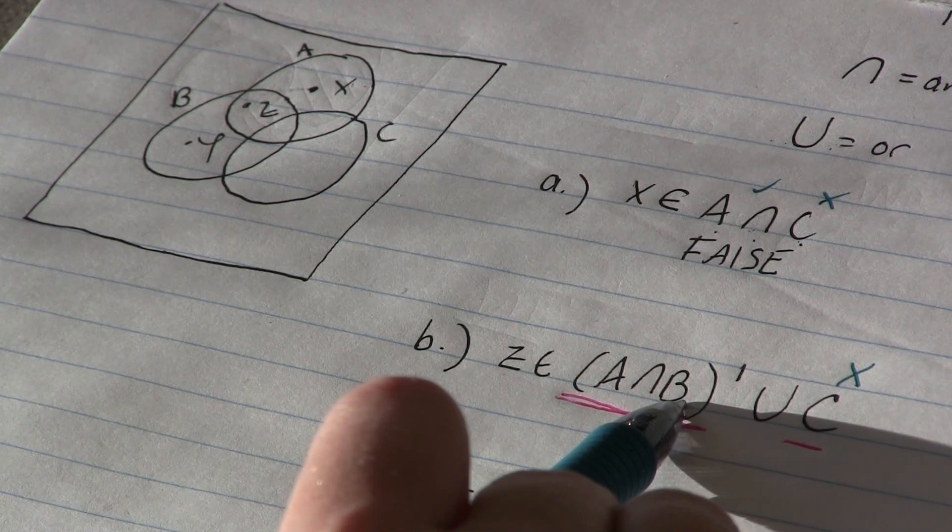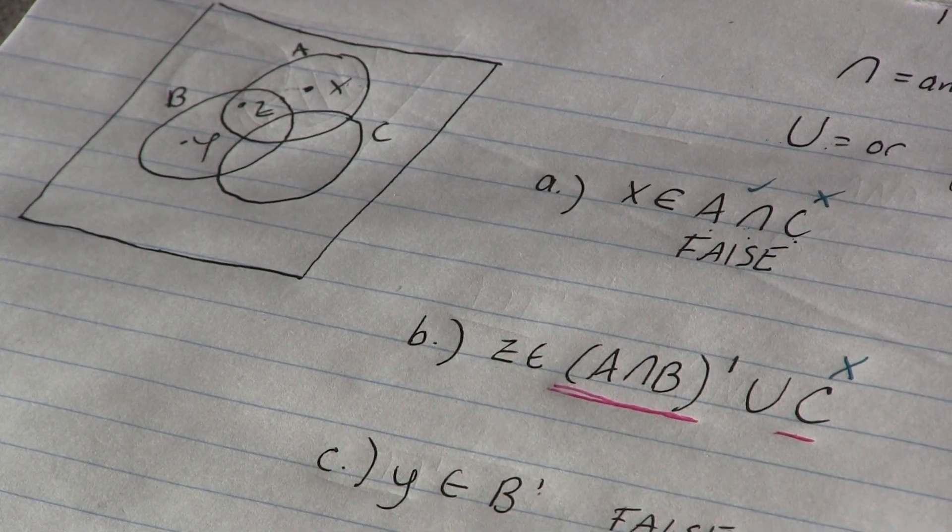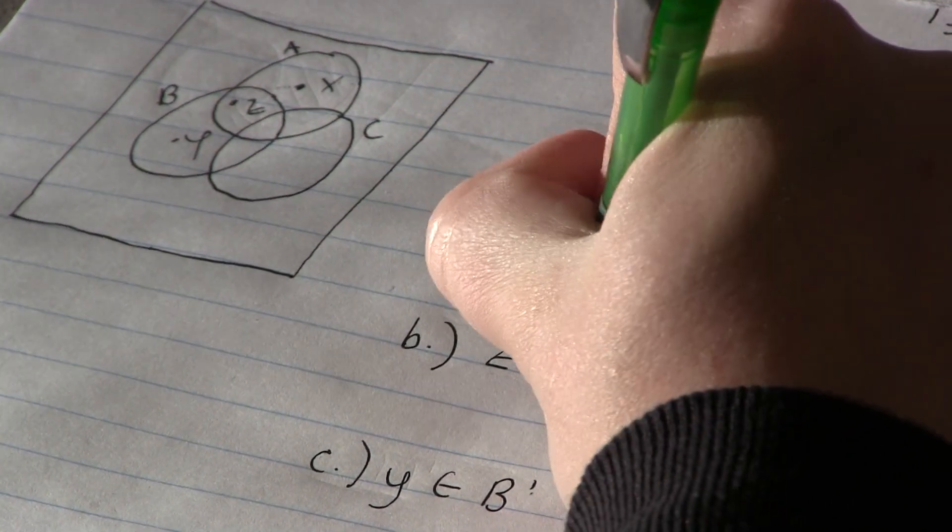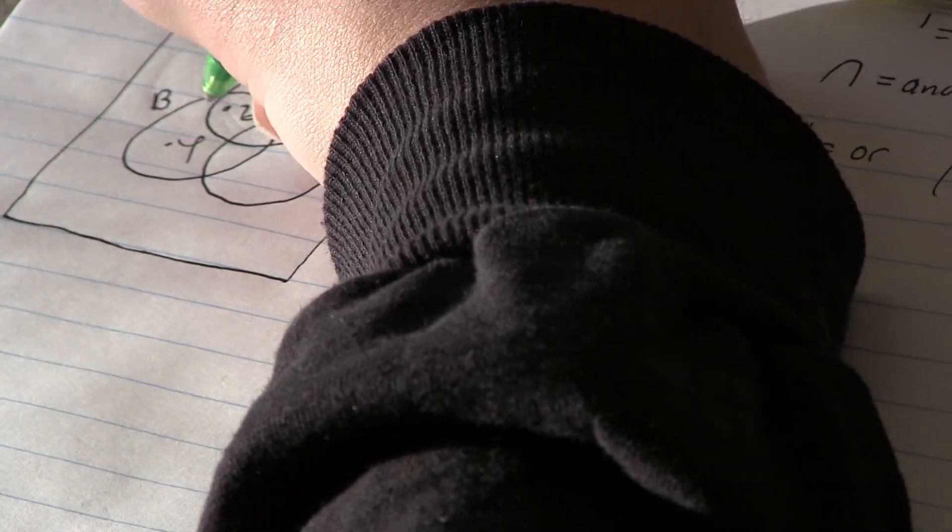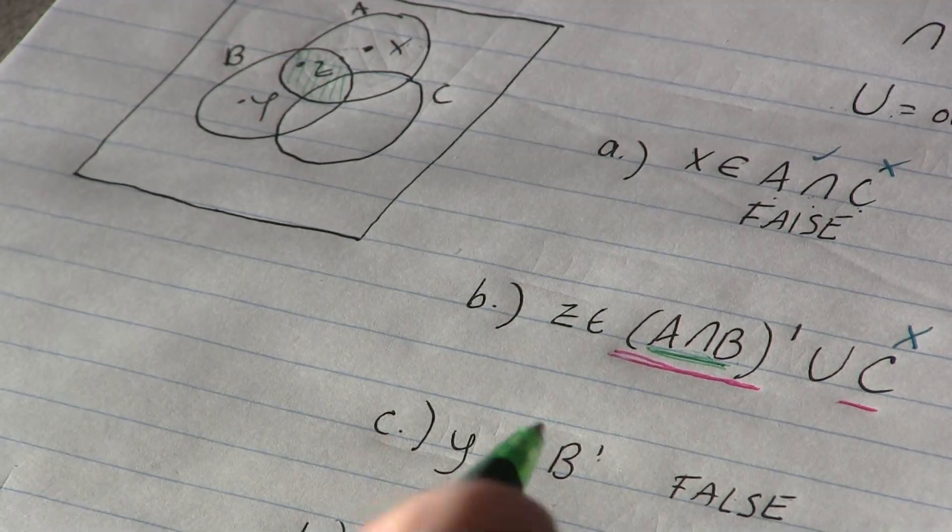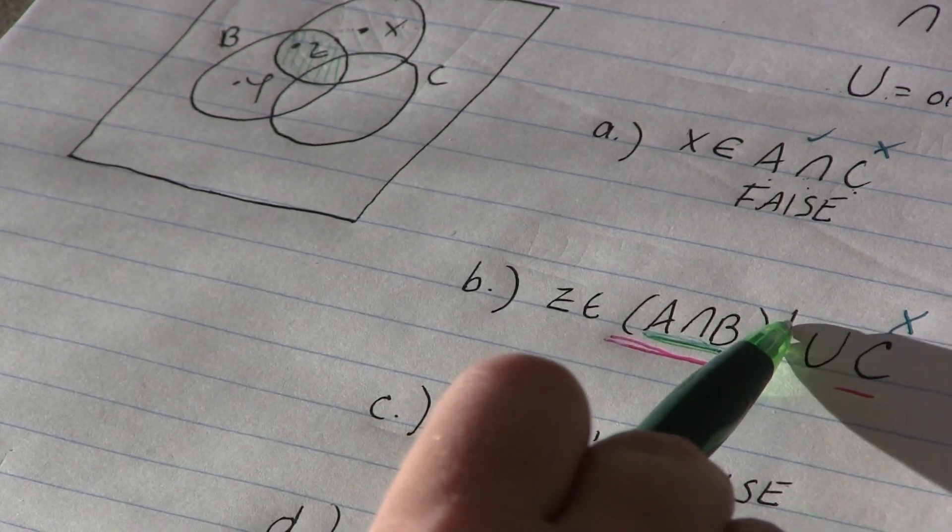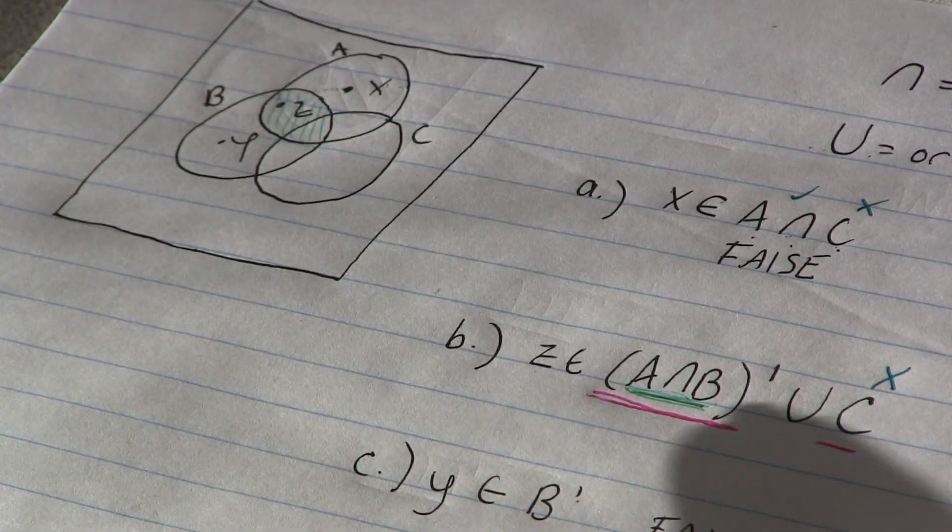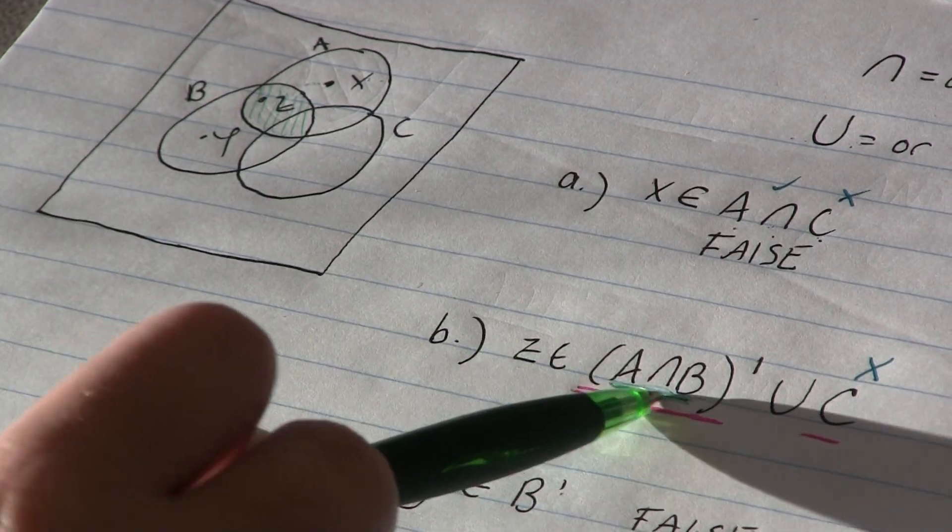A intersect B. This is going to get shaded in. So A intersect B is anything that's in A and in B. But this is the complement of that. So it's anything on the outside of that green.